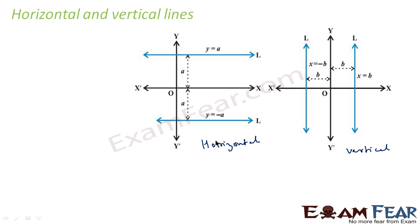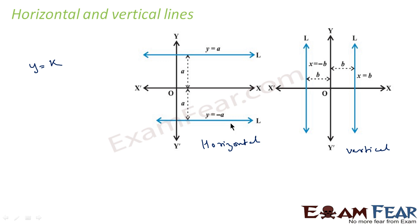When you say horizontal lines, that means it is parallel to the x-axis, so it maintains a common distance from the x-axis. So you say y is equal to some constant. Here y is equal to a, so you get a line that is parallel to the x-axis at a distance of a from it. When you say y is equal to minus a, again you get a horizontal line parallel to the x-axis at a distance of minus a.